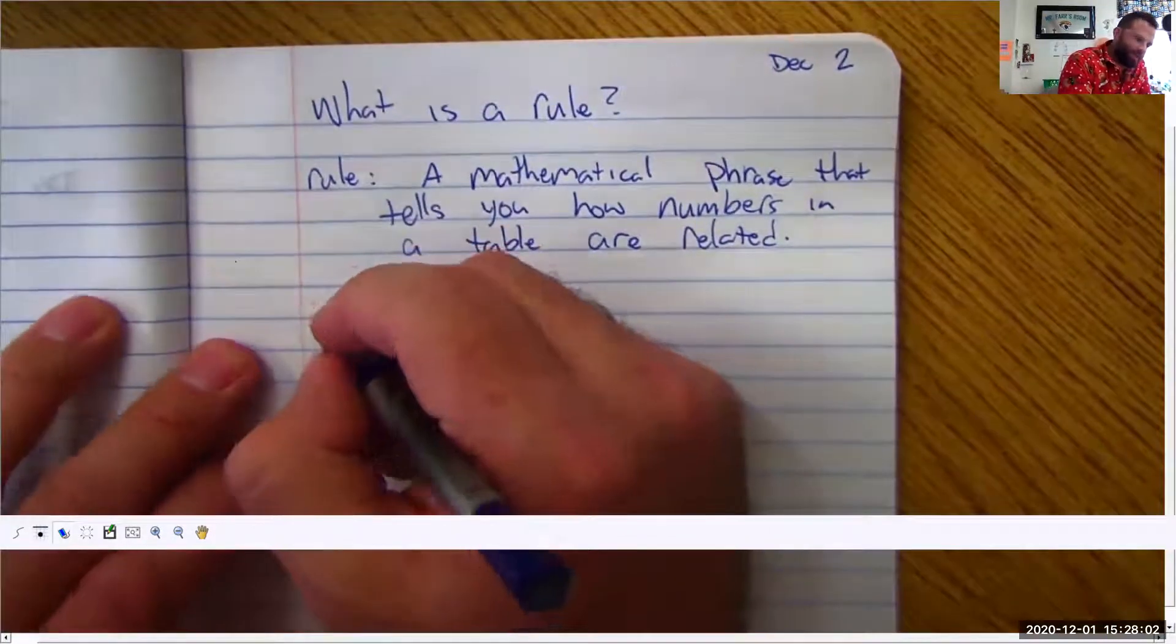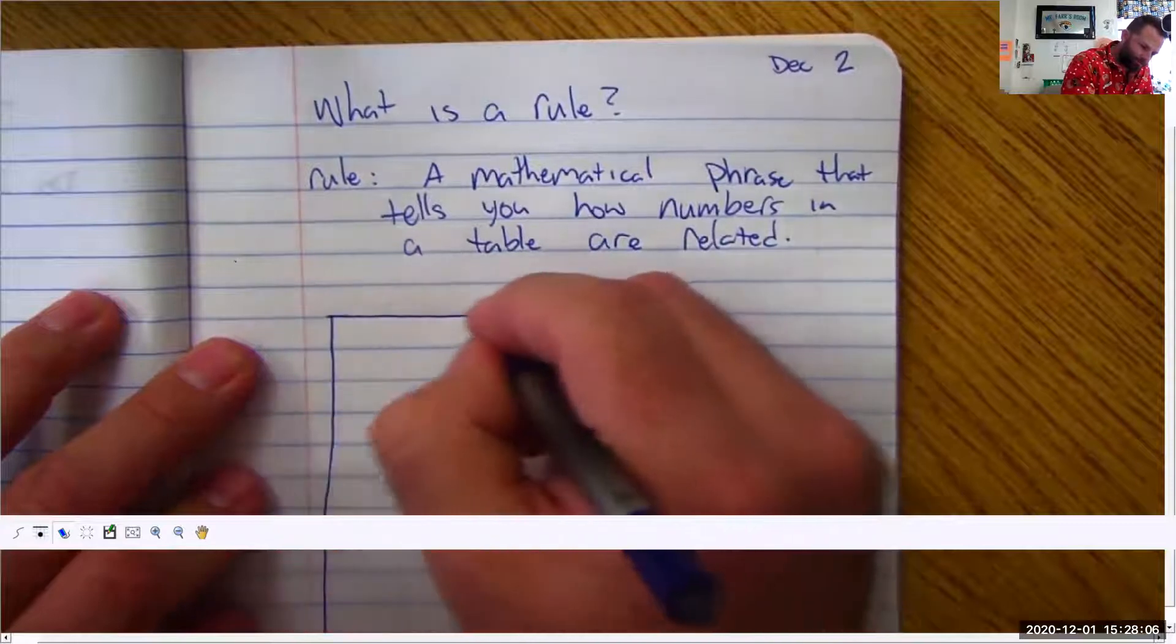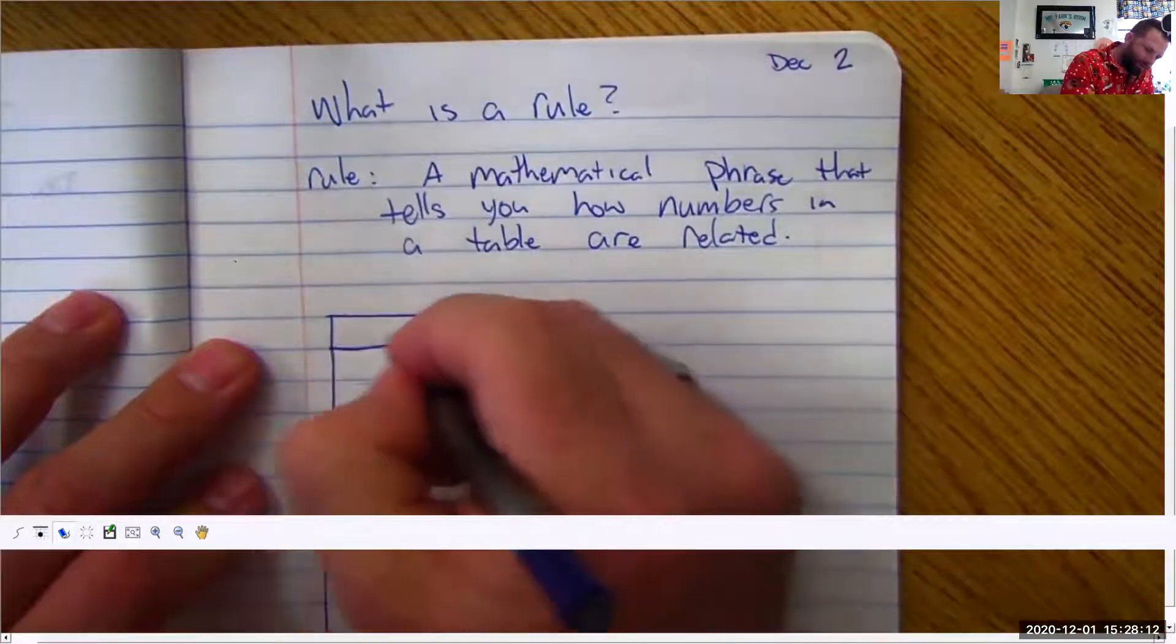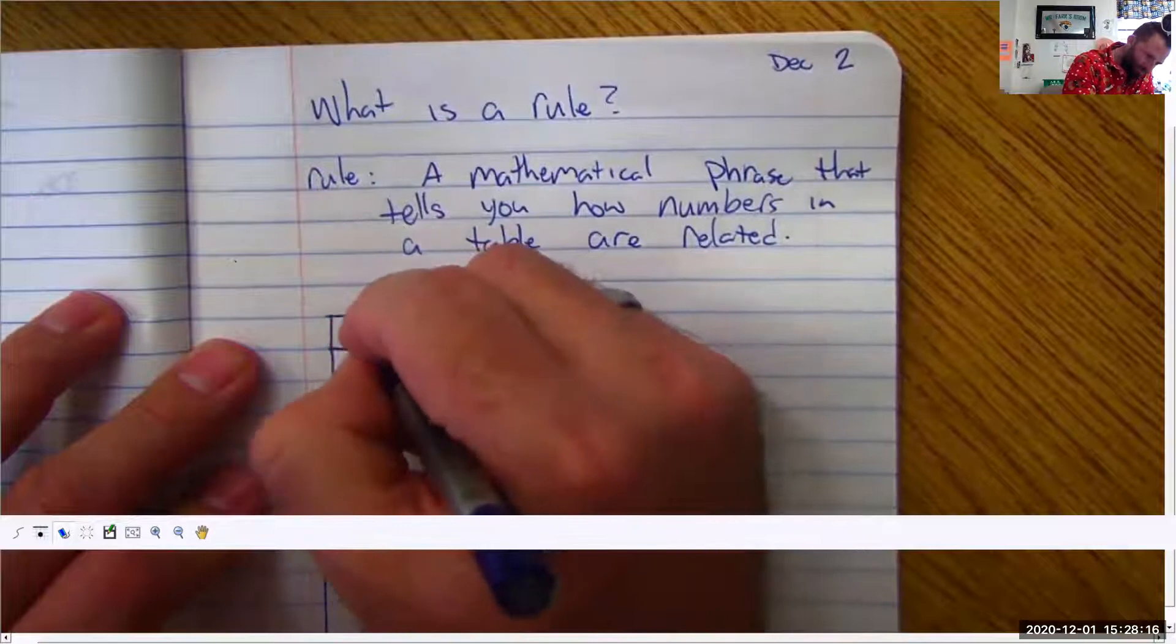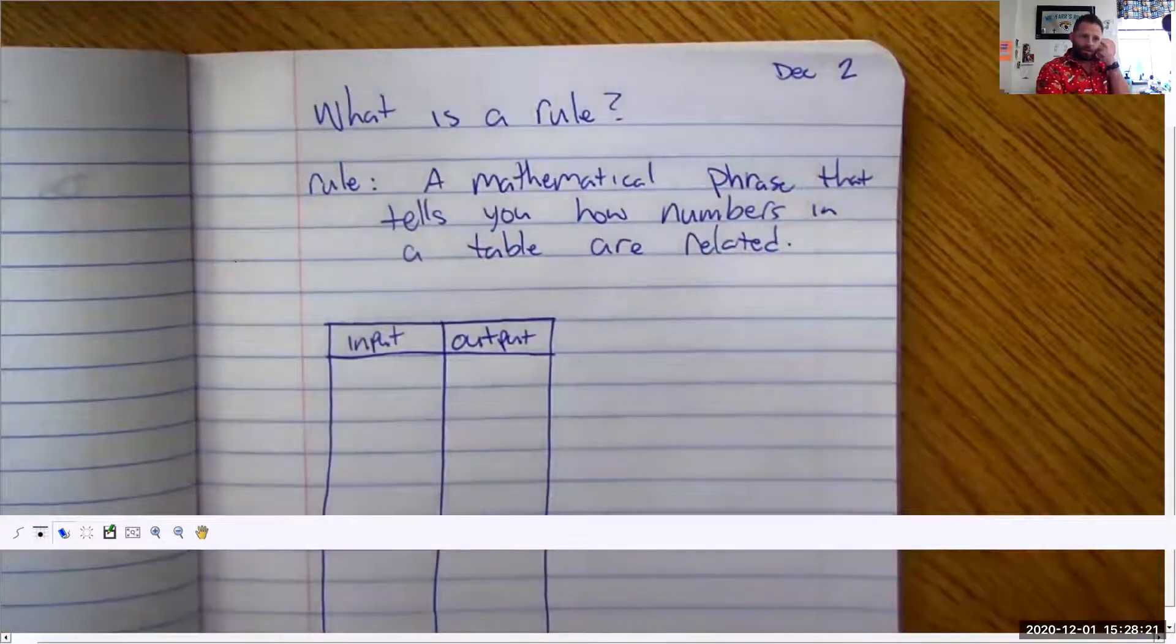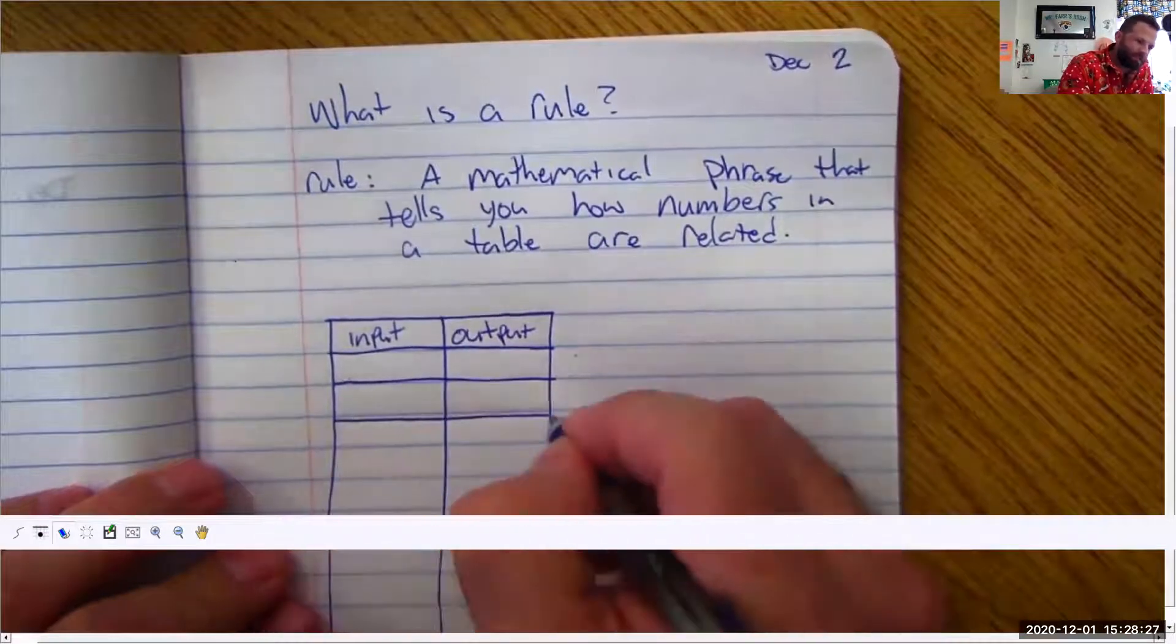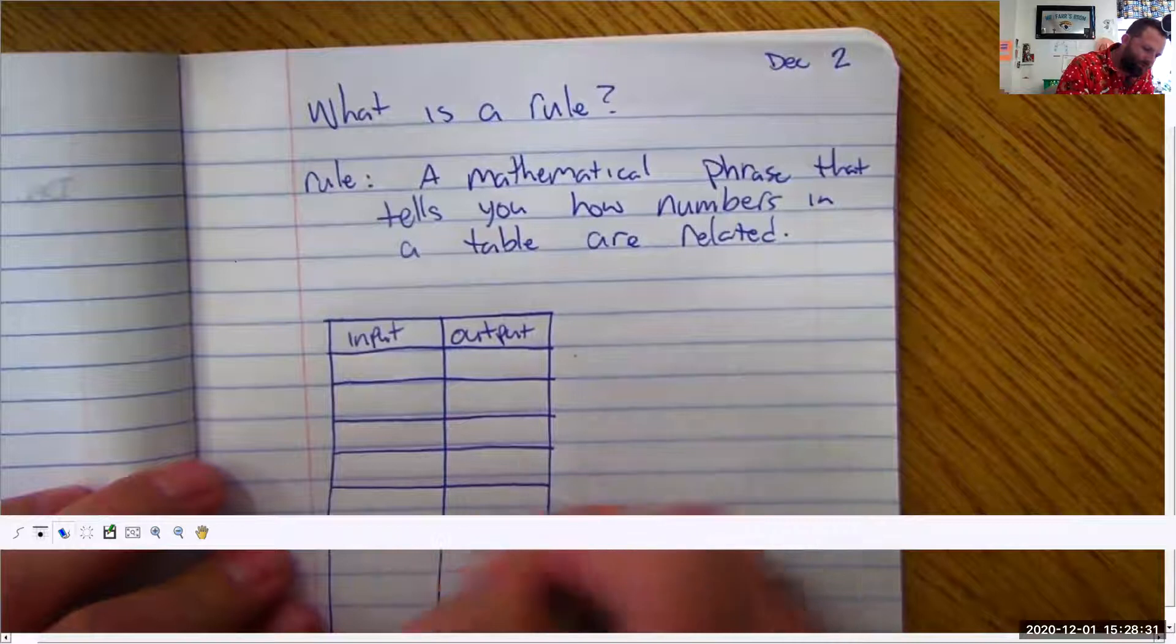Okay now usually what happens in a table you'll have something like this. Okay I'm going to draw a pretty good size table. I'm going to label the top part right here input and this is going to be output. Now input and output. There may be things that are missing on this table and the thing is is you've got to fill in the blanks.